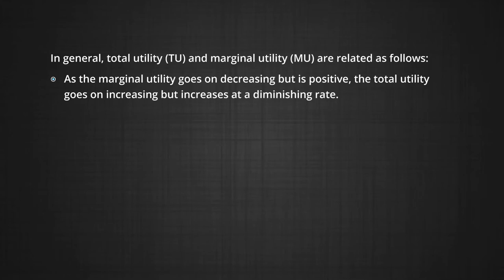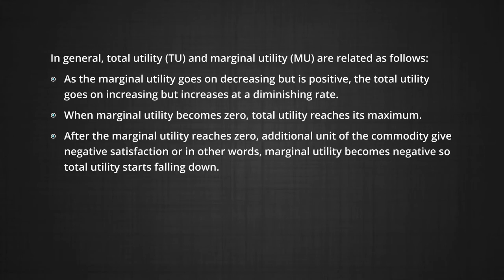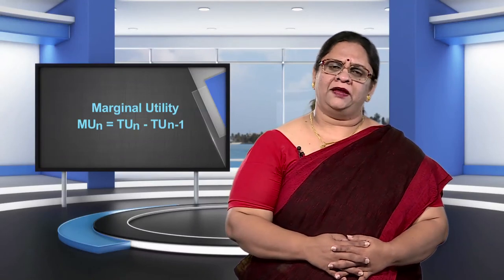When the marginal utility becomes zero, total utility reaches its maximum. After the marginal utility reaches zero, additional units of the commodity give negative satisfaction. In other words, marginal utility becomes negative, so total utility starts falling down.